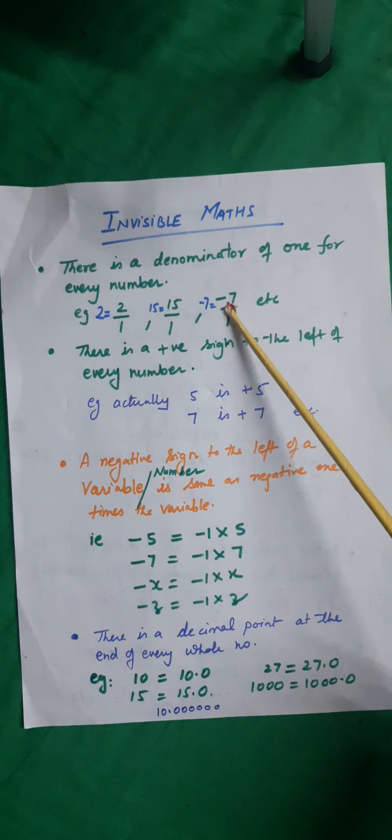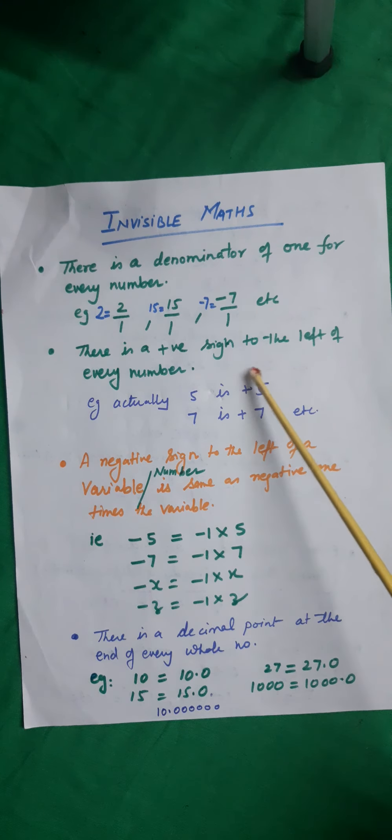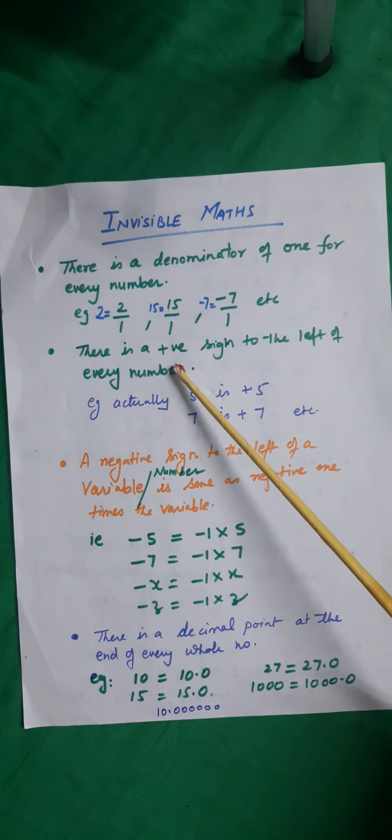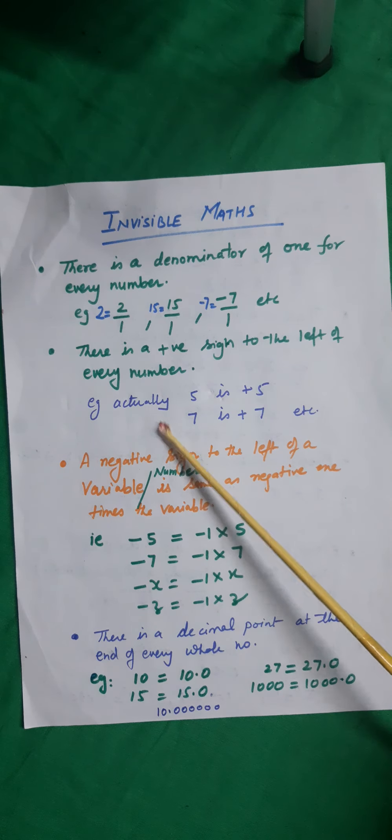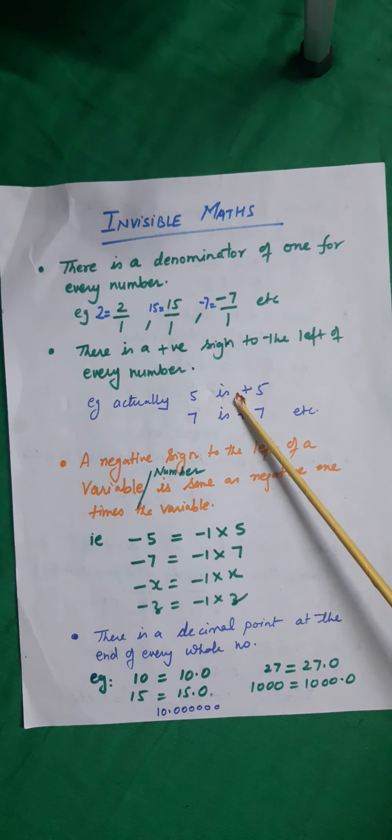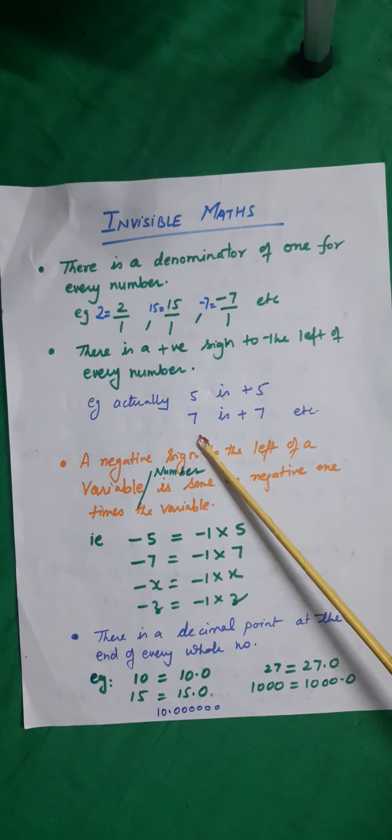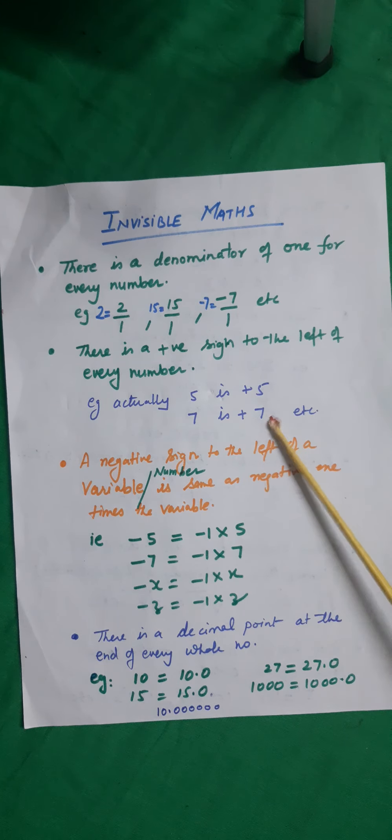Minus 7 can be written as minus 7 upon 1, etc. Second, there is a positive sign to the left of every number. Example 5: 5 is actually plus 5, 7 is actually plus 7, etc.